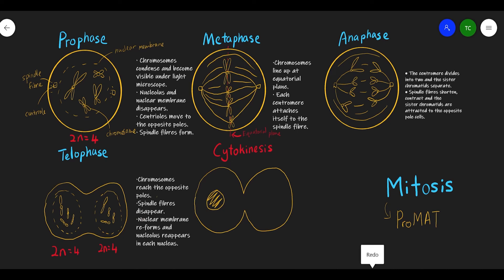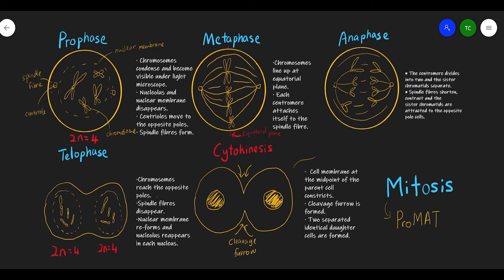Next is cytokinesis. The nucleus is fully formed. The key feature is two arrows pointing inwards — this is called the cleavage furrow. Cytokinesis is not actually part of mitosis; it is what happens after mitosis, after telophase. The cell membrane at the midpoint of the parent cell will constrict, a cleavage furrow is formed, and two separated identical daughter cells will be produced.